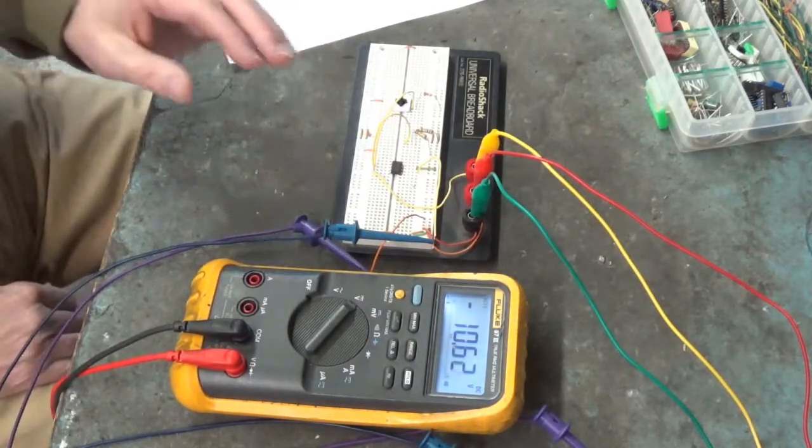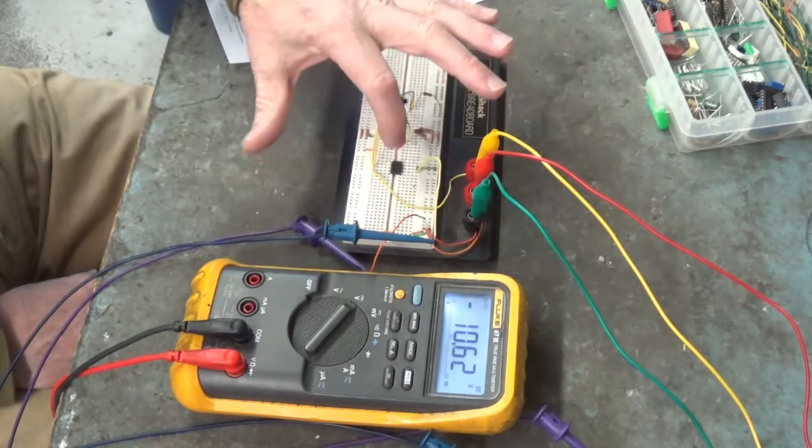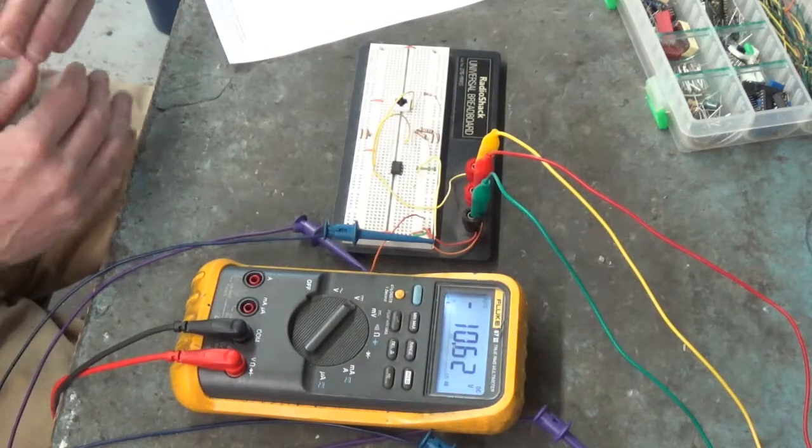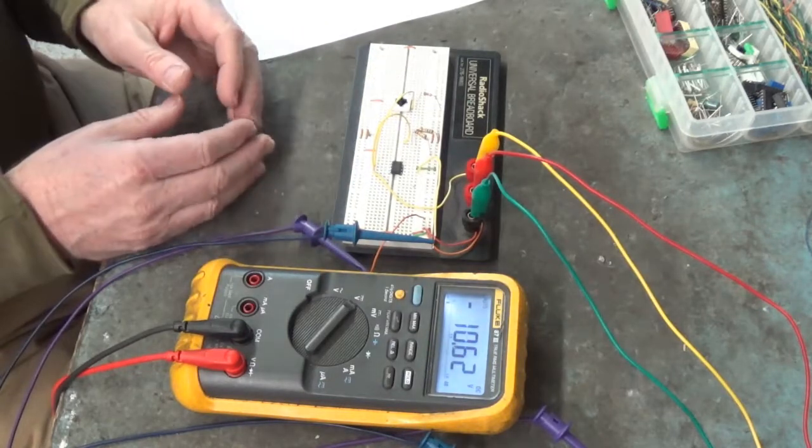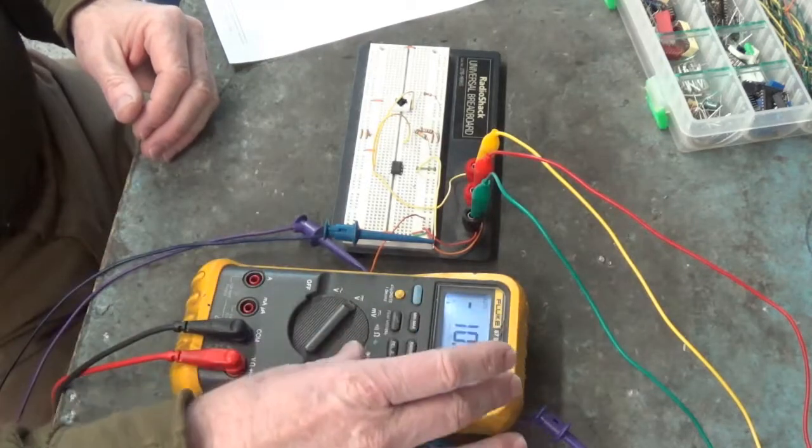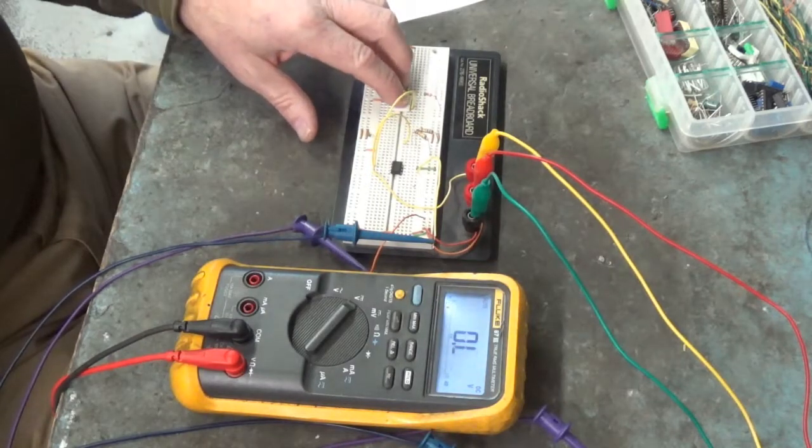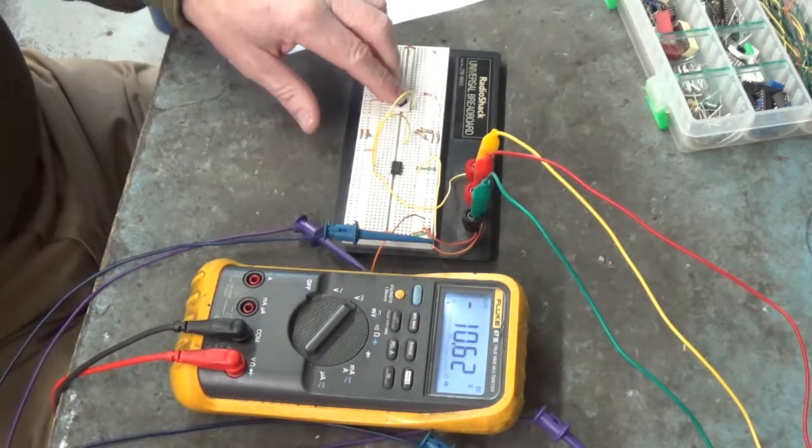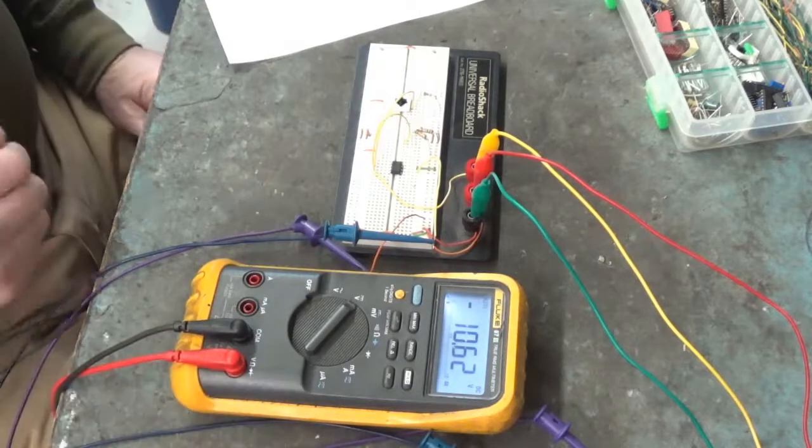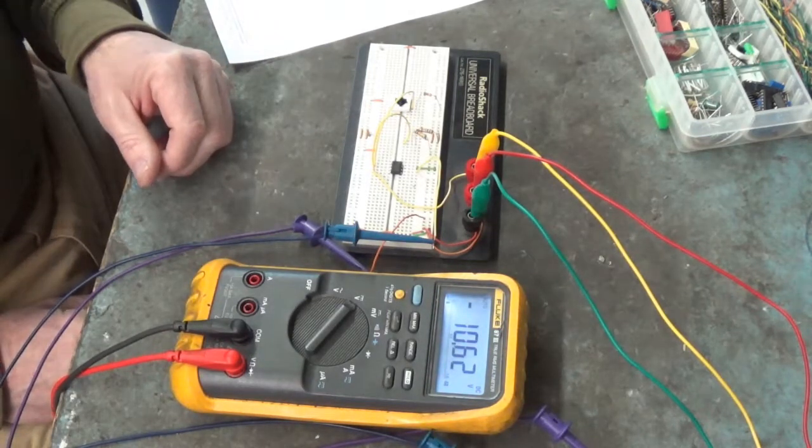That's testing the operational amplifier in open loop gain mode. There's no feedback from the output pin to the input pins. And when we test it in this mode, we get very, very close to the supply pins. We'll never get it quite there, but we'll get close. That's the way I test an operational amplifier. They do go bad.